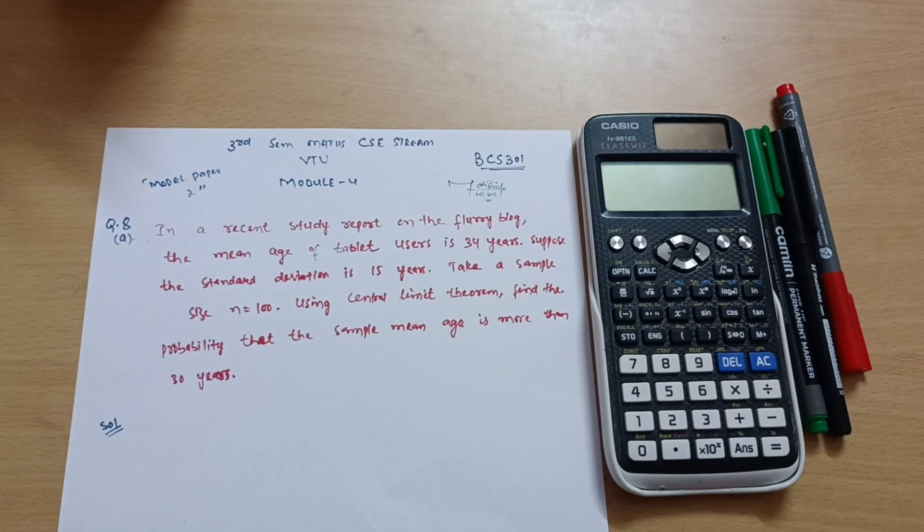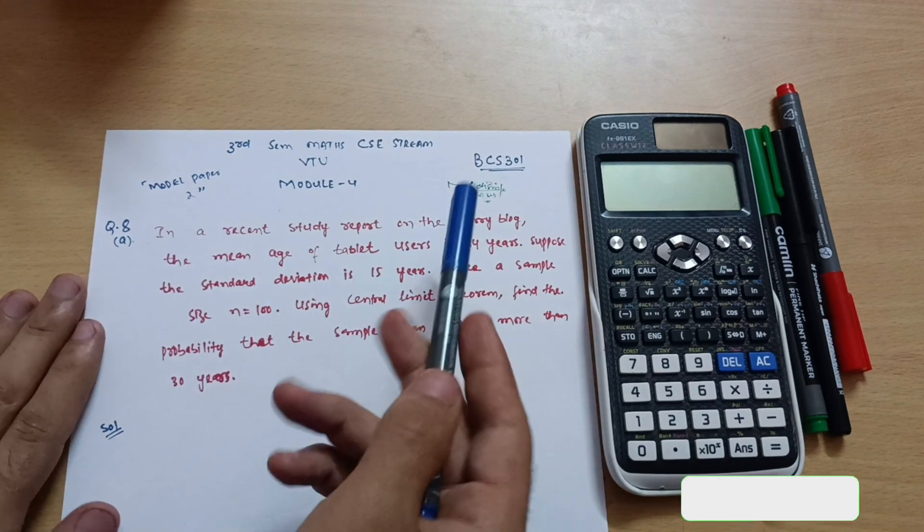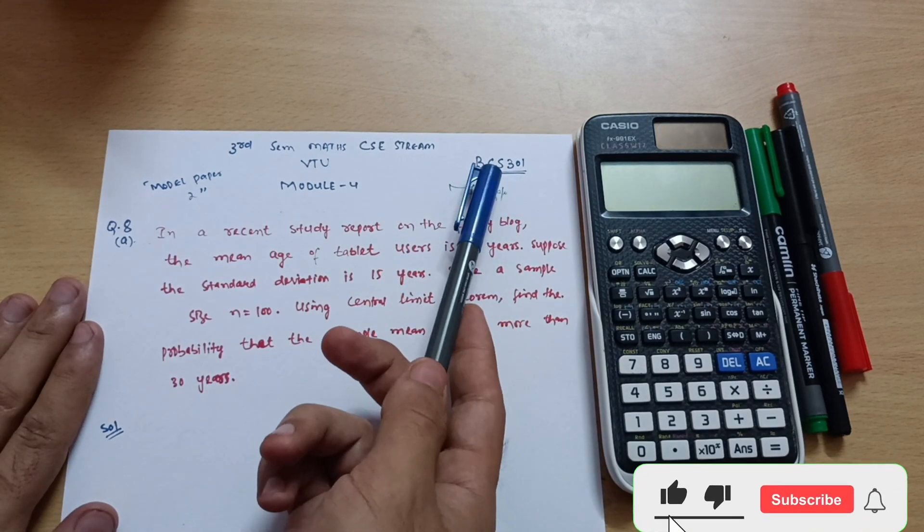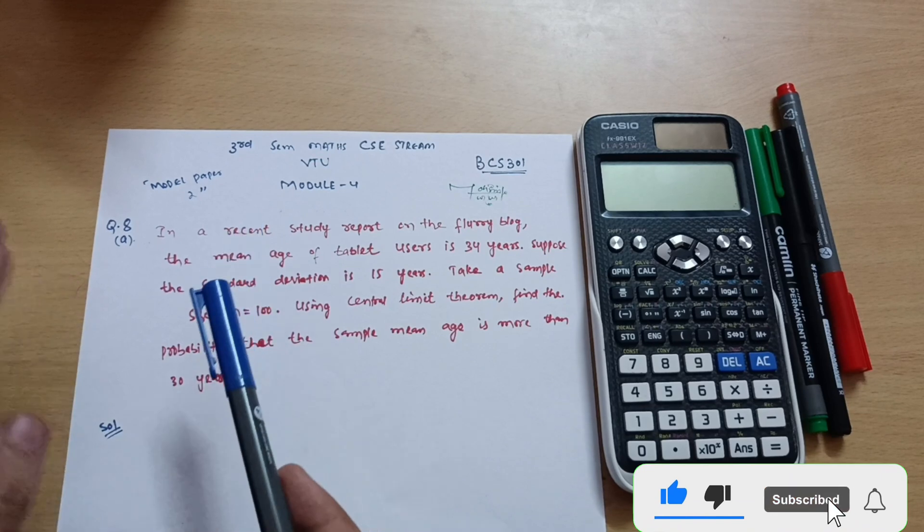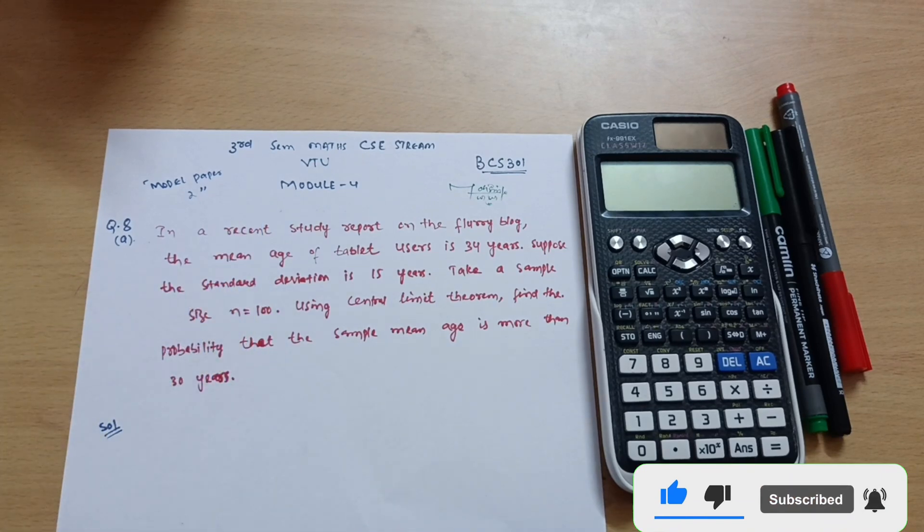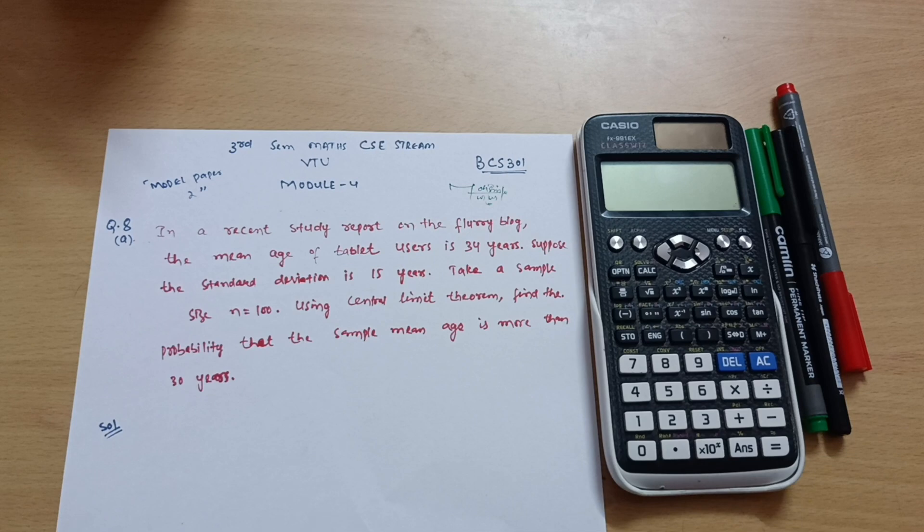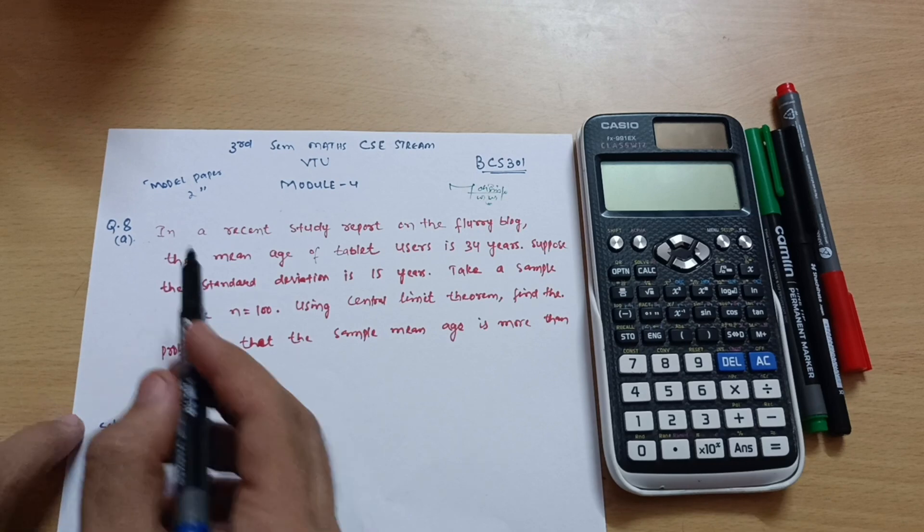Hello everyone and welcome back. We are discussing the module question paper for the CSC stream students, third semester. Subject code is BCS or BMAT CS301. So far we have discussed a variety of problems from the module question paper. If you have not watched it yet, you can go through the description box. So let us solve today another problem from the central limit theorem.